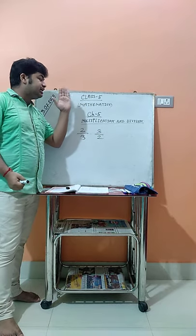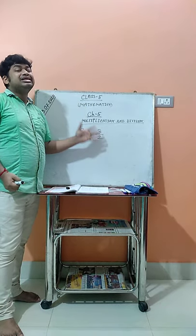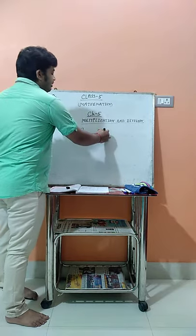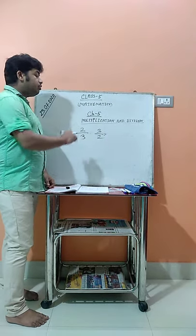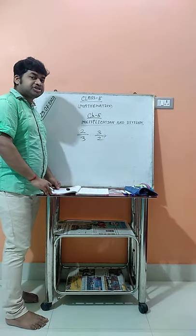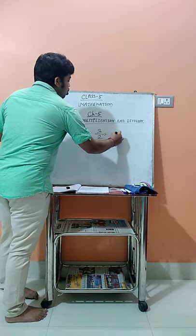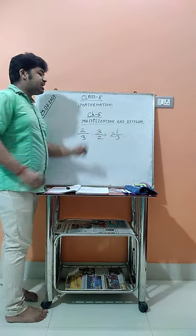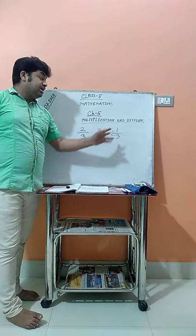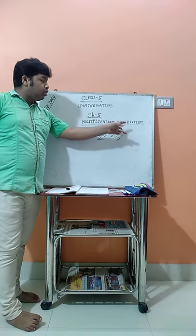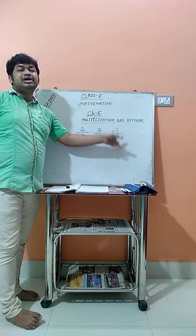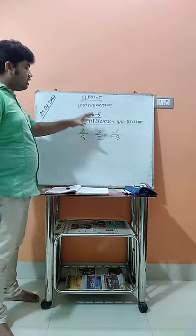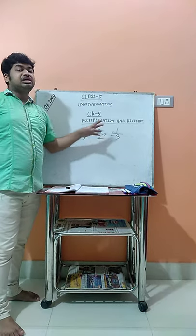When the numerator is more than the denominator, it is called the improper fraction. And what is the mixed fraction? When a number like 2 and 1/3 is given — a whole number combined with a fraction — this type of number is known as the mixed fraction.